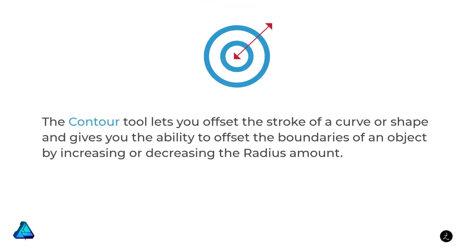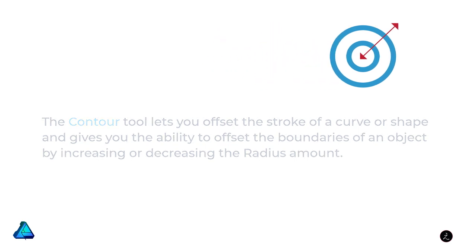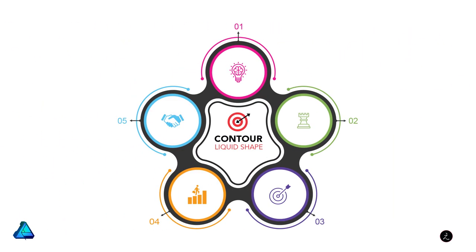The Contour tool lets you offset the stroke of a curve or shape and gives you the ability to offset the boundaries of an object by increasing or decreasing the radius amount. Let us go ahead and explore the Contour tool inside Affinity Designer using simple shapes.